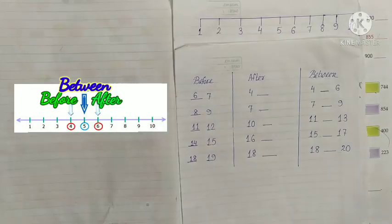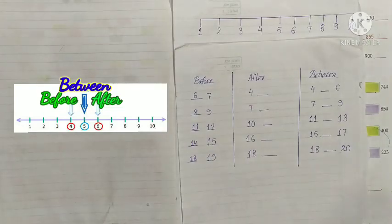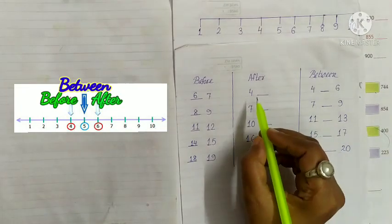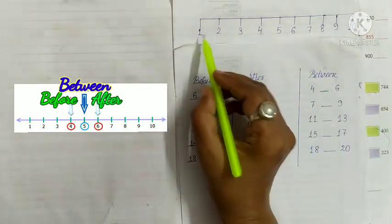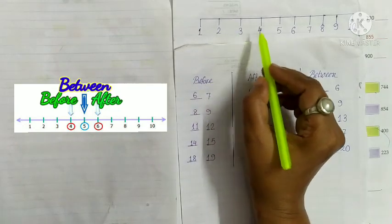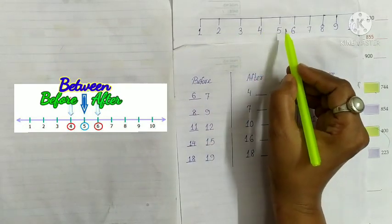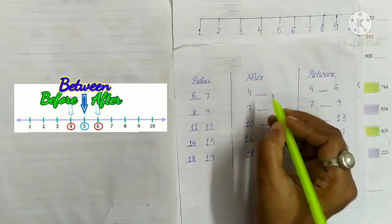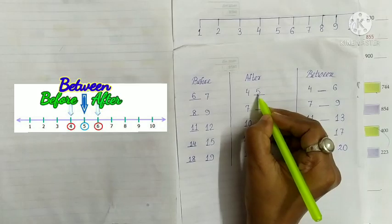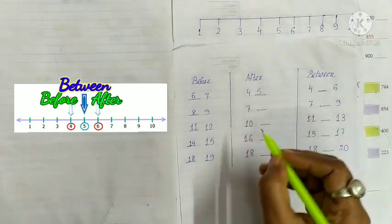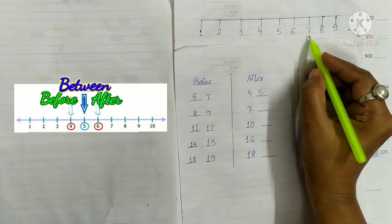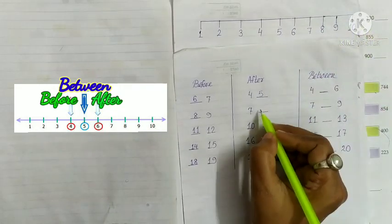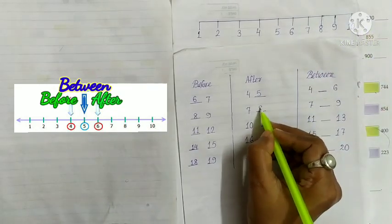Now let's solve after number. After means next number. Here, 4. 1, 2, 3, 4. After 4 is 5. Write 5. Next, 7. After 7 is 8. Write 8.